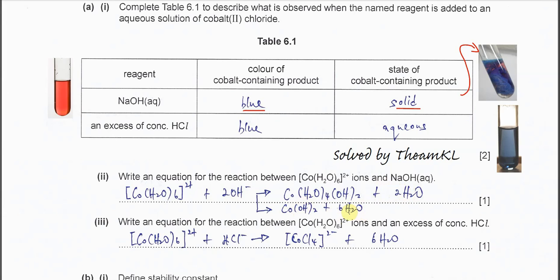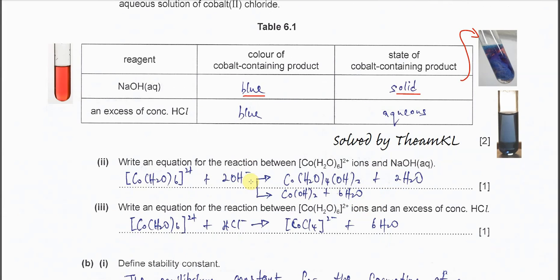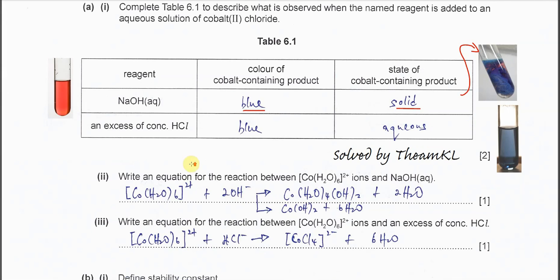Part 3 is about the second reagent. The excess of concentrated HCl is added, so you see blue color and it's a blue solution. The state is aqueous. When you add concentrated HCl to hexa aqua cobalt-2, it goes from pink to blue solution.